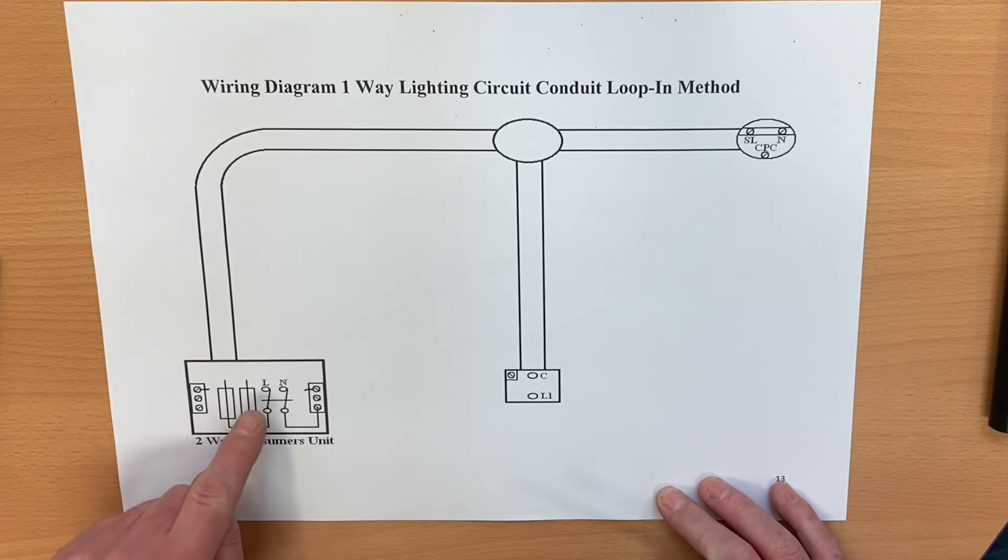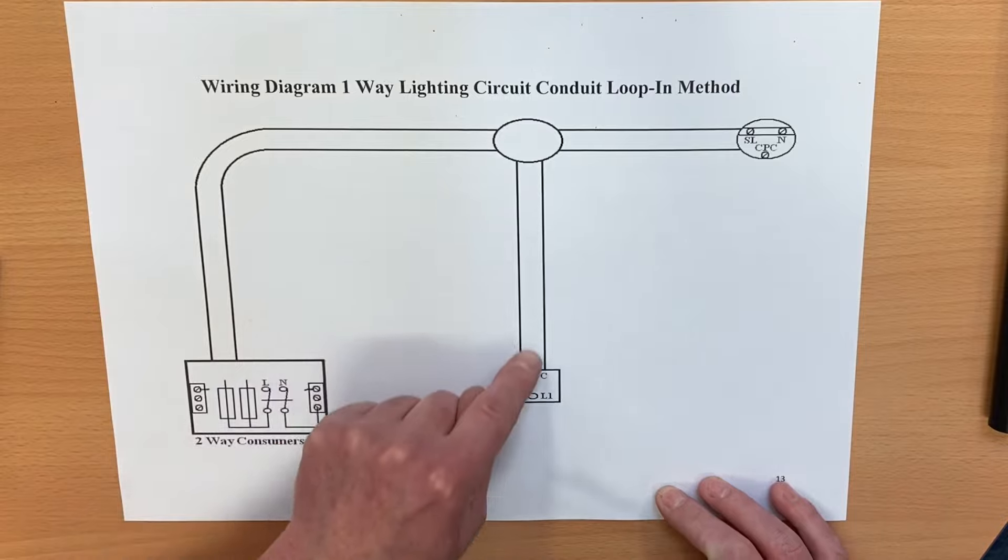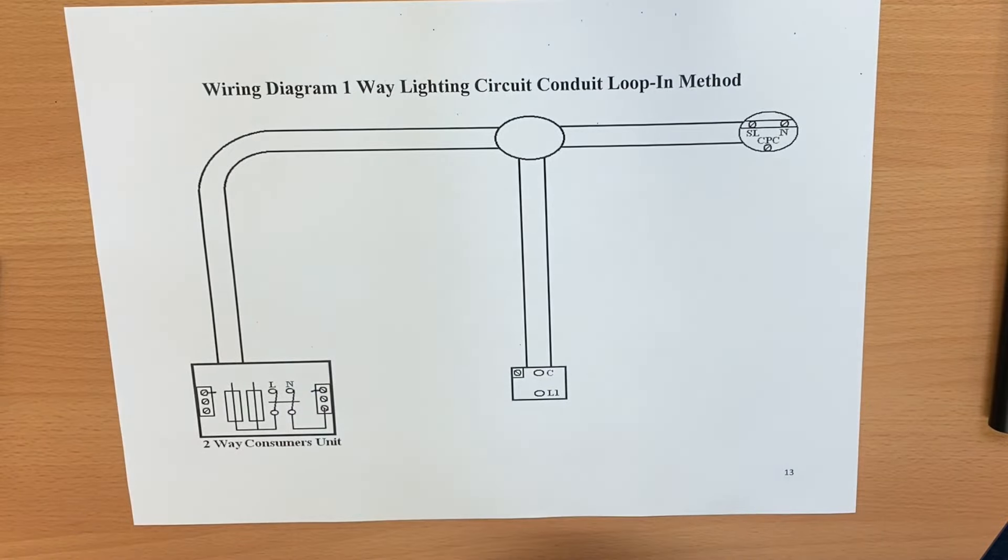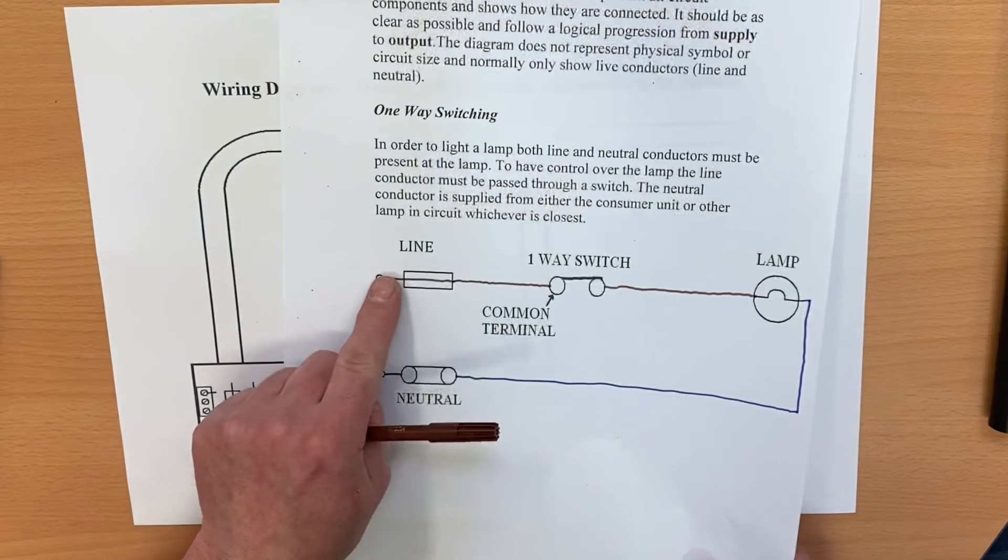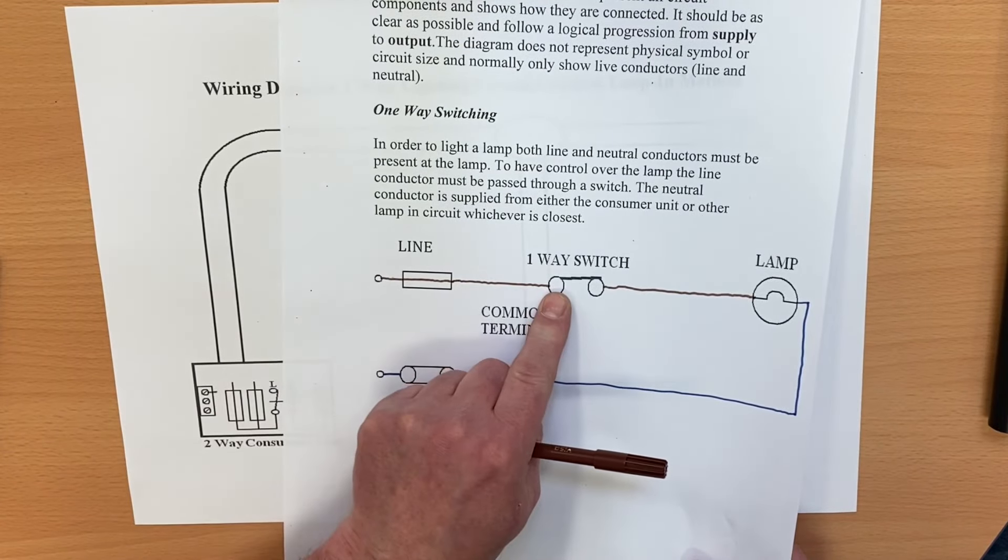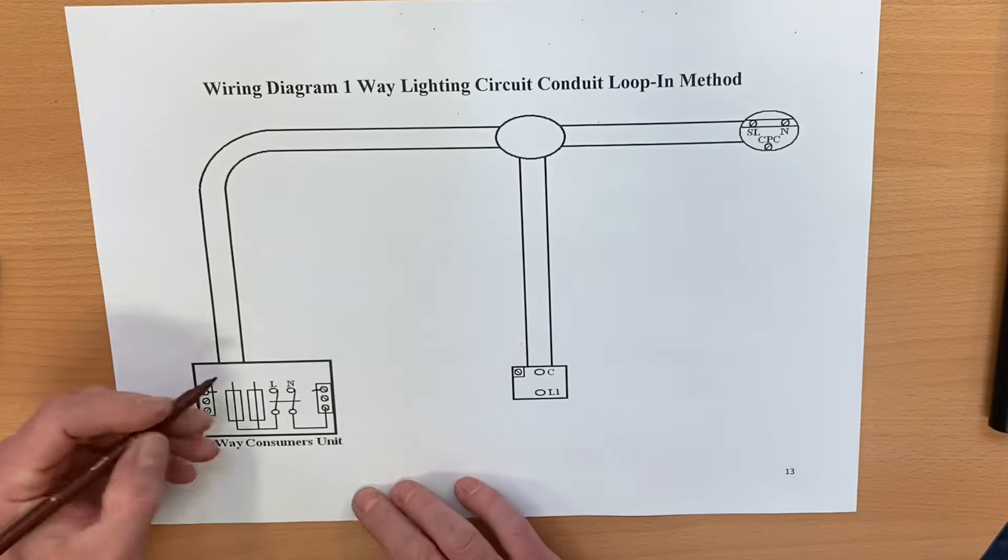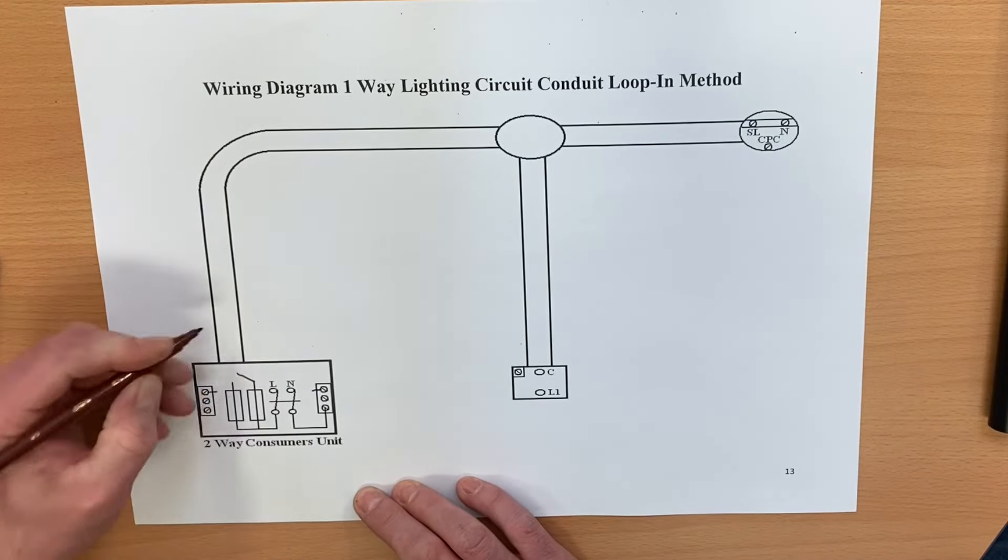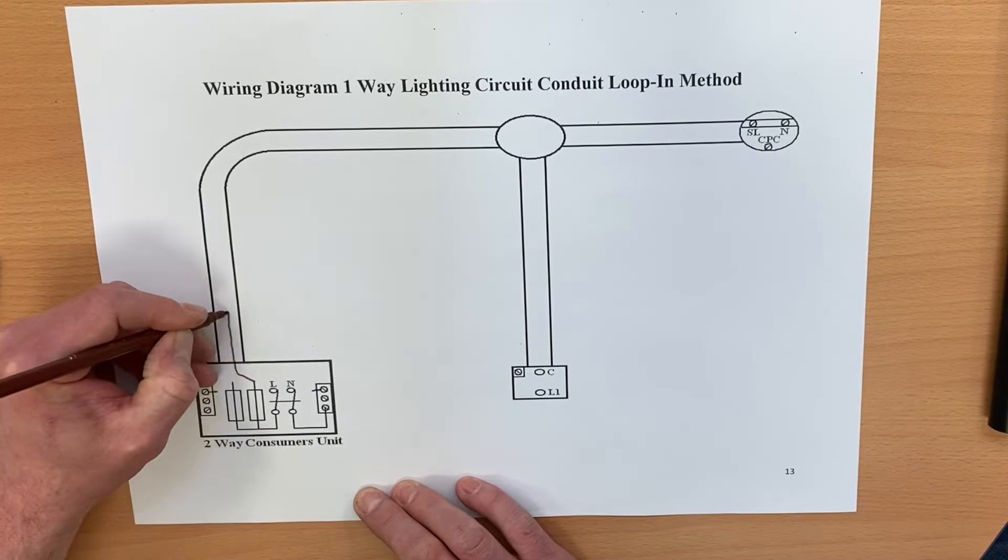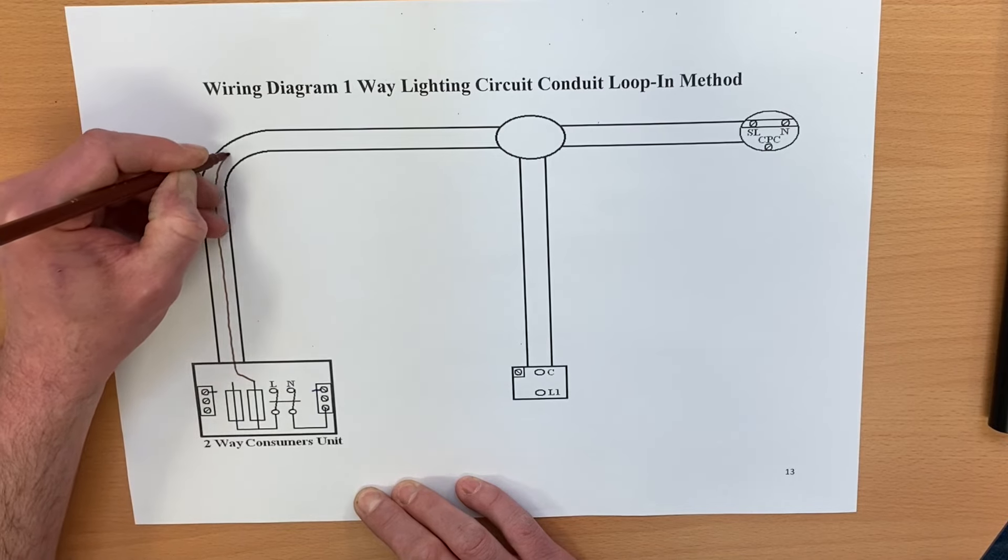We said the line conductor goes directly to the common of our first switch. So let's put that one in. We come out of here and we're going to bring that through our system, through our conduit system. It's going to go directly into the common of the first switch.